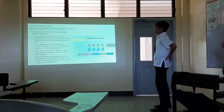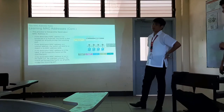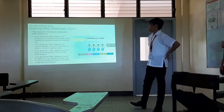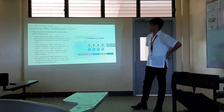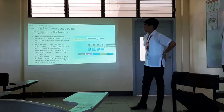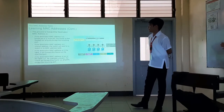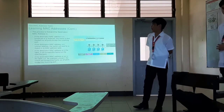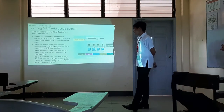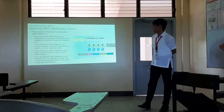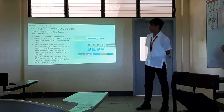The process to forward based on destination MAC address: if the destination MAC address is a broadcast or multicast, the frame is flooded out all ports except the incoming port. If the destination MAC address is a unicast address, the switch will look for a matching entry in its MAC address table. If the destination MAC address is in the table, it will forward the frame out the specified port. If the destination MAC address is not in the table, the switch will flood the frame out all ports except the incoming port.